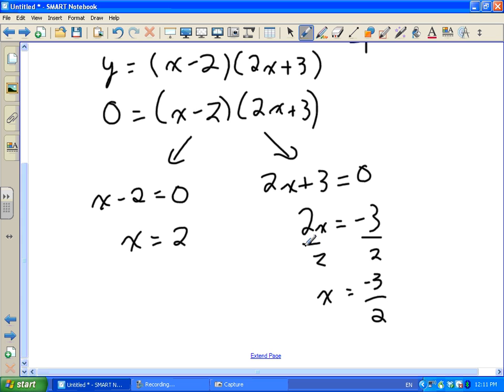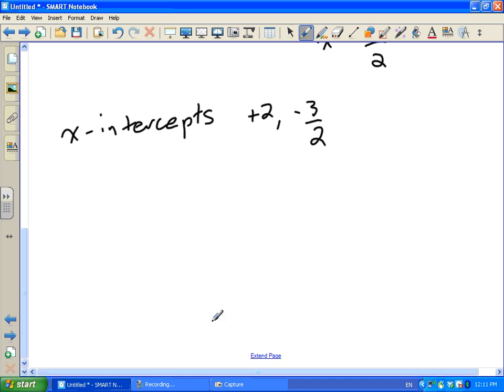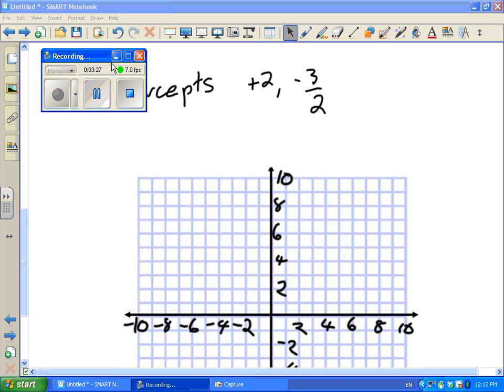So my 2 x intercepts are positive 2 and negative 3 over 2. So I have my 2 x intercepts. I'll write that out here. x intercepts are positive 2, negative 3 over 2. Nice. I'm going to quickly graph them. So I'm going to put a graph up. You guys make one right now.